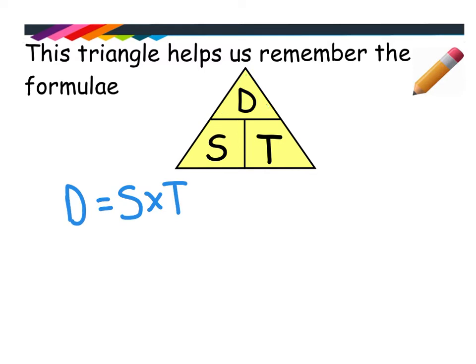Next, let's pretend I had a question asking me for the speed. So I would put my finger over speed, or in this case color it in, and that leaves you with D over T. So the formula for speed is D over T, which in maths means divide, so distance divided by time.